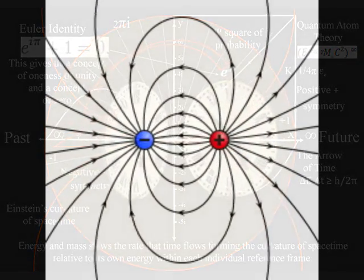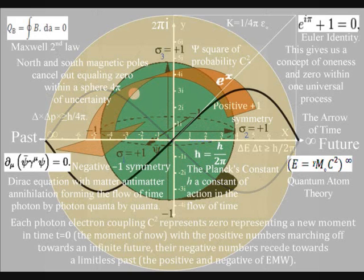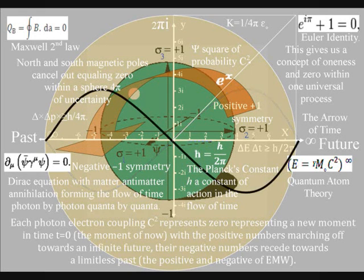This theory sees oneness, unity, and harmonics, that can only be formed by one universal process of spherical symmetry forming and breaking.